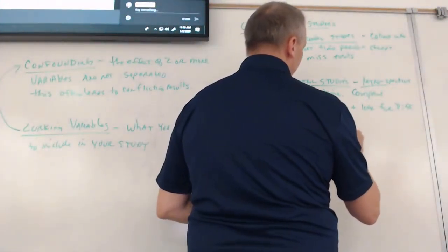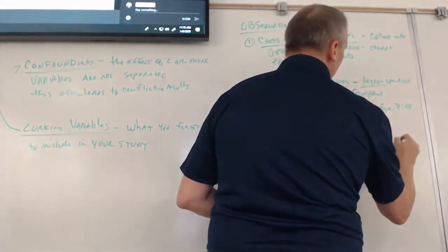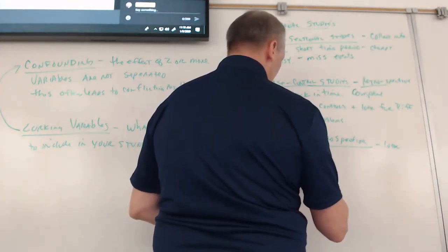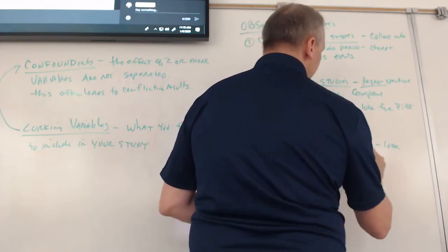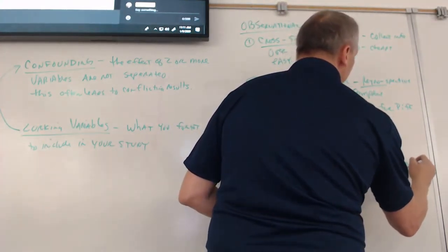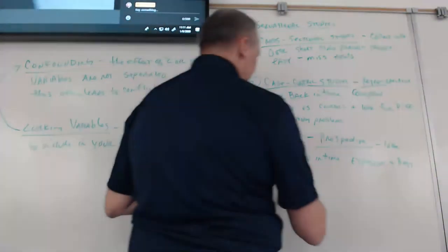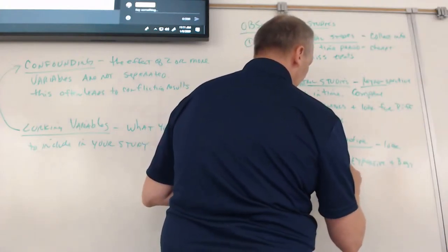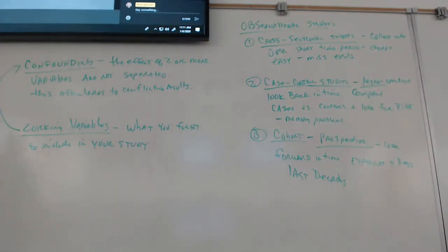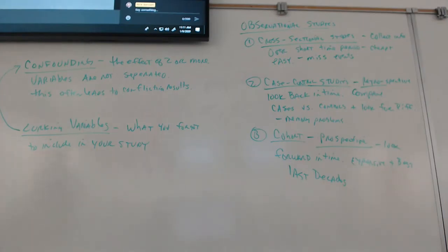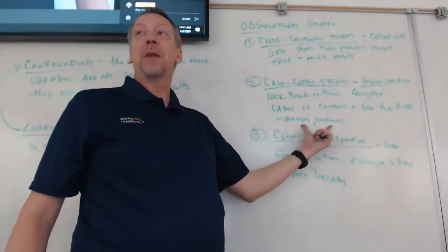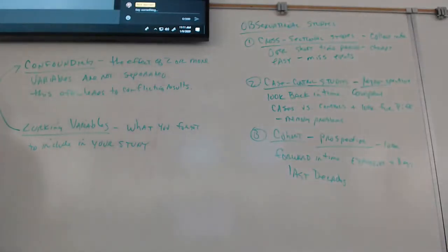The cohort study is prospective — you look forward in time. It's the most expensive and probably the best. These can last decades. We take two people, say Corinne and CJ, and ask them to keep a journal of what they eat every day. Then we can look: Corinne eats salads every day, CJ eats meat all the time — no wonder CJ got colon cancer. You don't have the memory problems from looking back in time, but it's very expensive to collect that data.